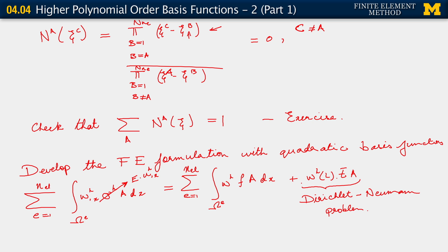Here we have the Dirichlet-Neumann problem. Two questions: what other kind of problem could we consider? We could consider the Dirichlet-Dirichlet problem. And why do I say this is the Dirichlet-Neumann problem? It shows up in the fact that this is the Neumann boundary condition, while the Dirichlet condition is already embedded in our spaces.